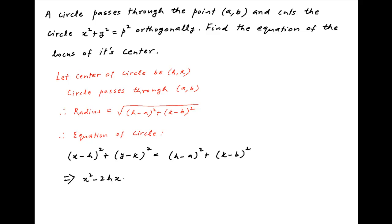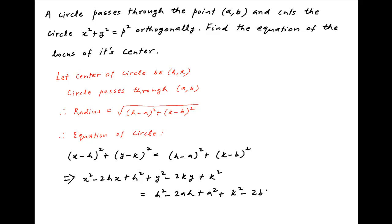Expanding both the left hand side and the right hand side, we get x squared minus 2hx plus h squared plus y squared minus 2ky plus k squared is equal to h squared minus 2ah plus a squared plus k squared minus 2kb plus b squared. h squared and k squared cancel across the left hand side and the right hand side.